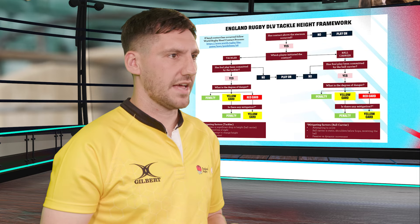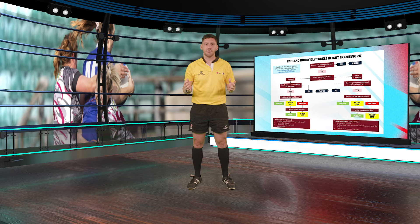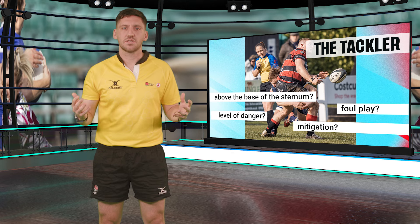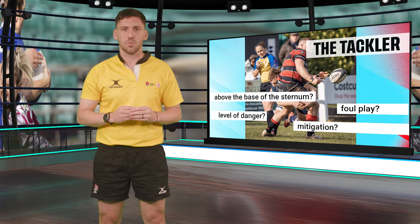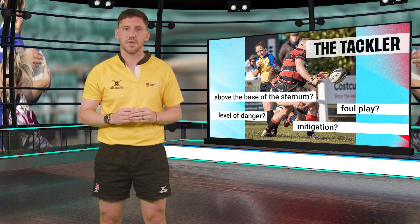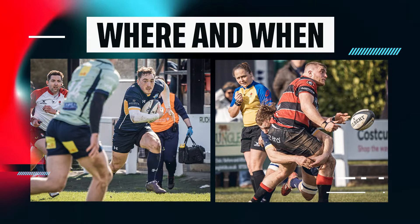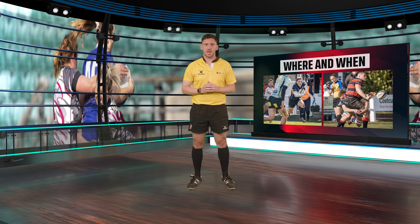With this framework, we start at penalty only and collect evidence to increase the sanction, and then we can apply mitigation. For example, if we have a tackle which starts above the base of the sternum, but is a low level of force, the tackler's always in control, and it's at low speed, you should look to award a penalty. This is the opposite to the way that we use the World Rugby Head Contact process — that's something we'll talk about in a different video.